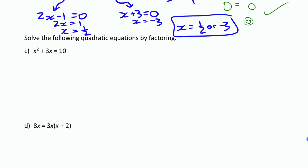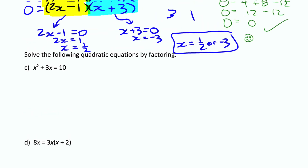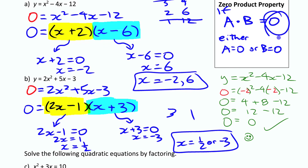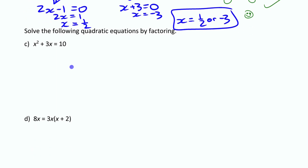Now these next ones are quadratic equations, not functions — they're just equations with an x² term. You apply the exact same approach, but if we want to use factoring and the zero product property, we need zero on one side. The zero product property only works when one side is zero — if there were a 4 there instead, a and b could be many different pairs. So we rearrange to get zero on one side: x² + 3x - 10 = 0.